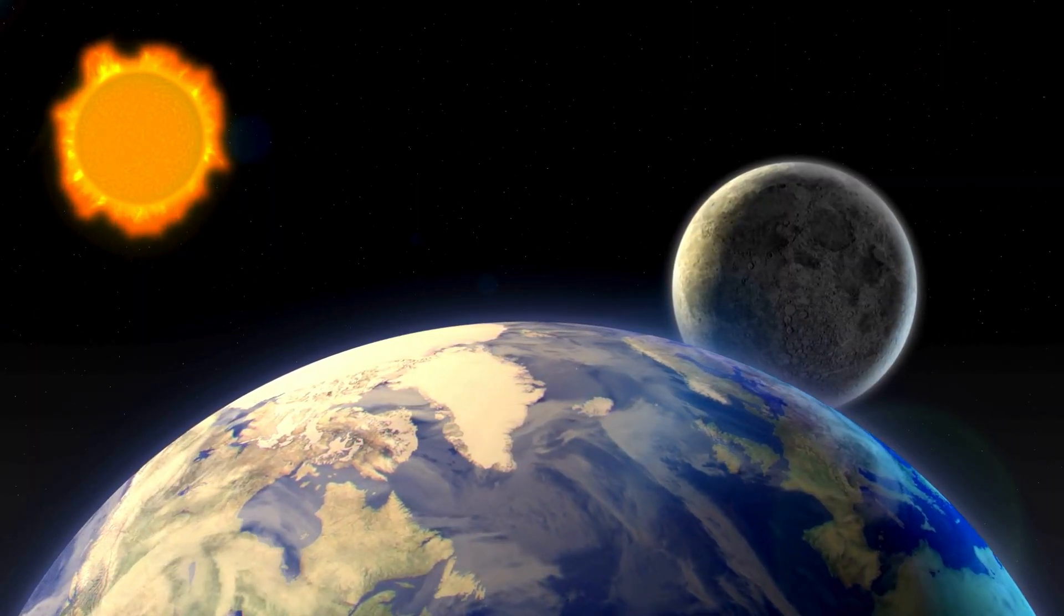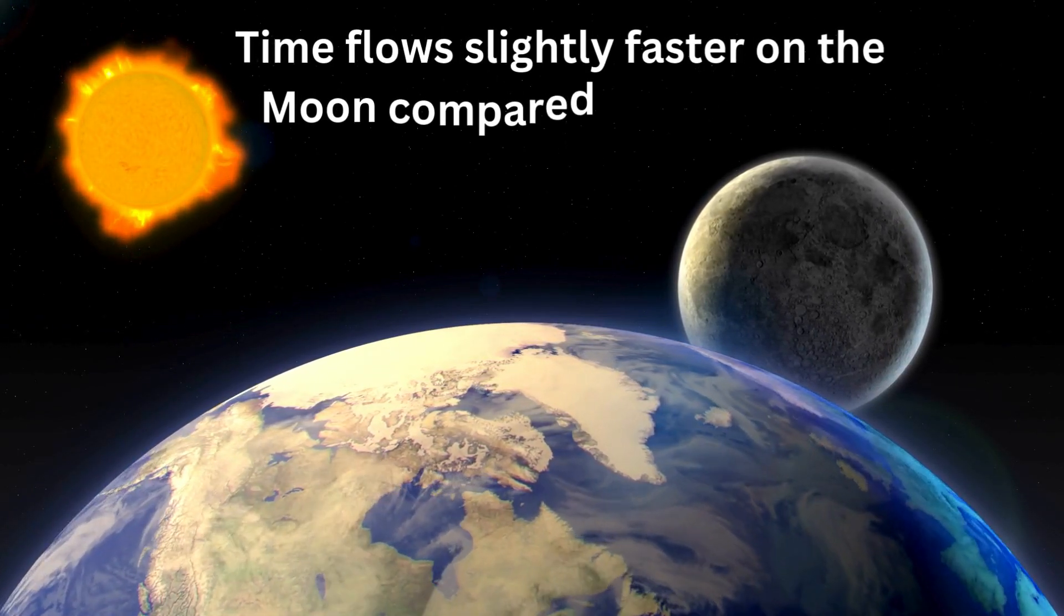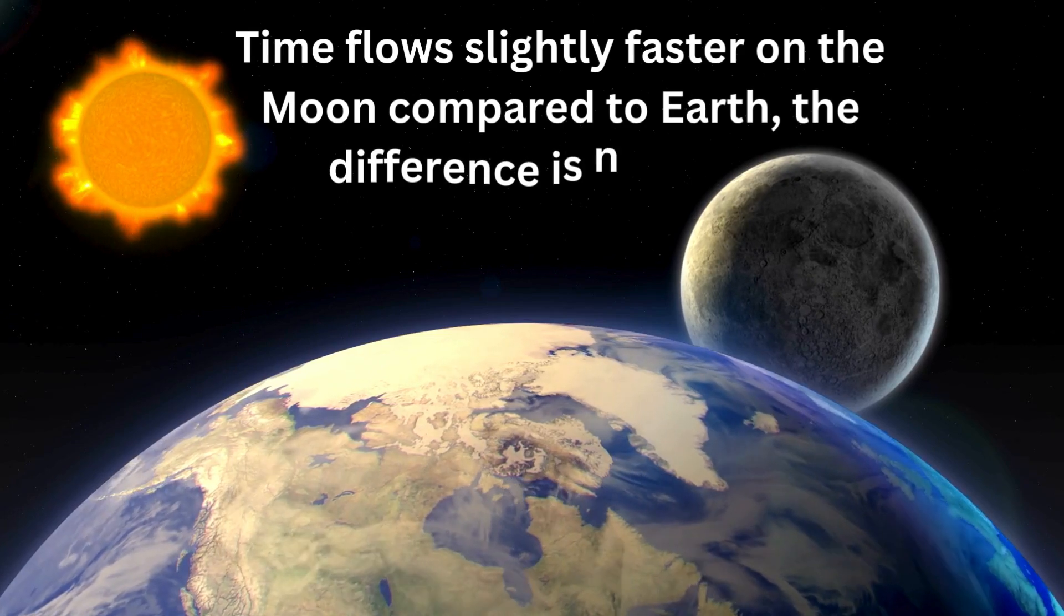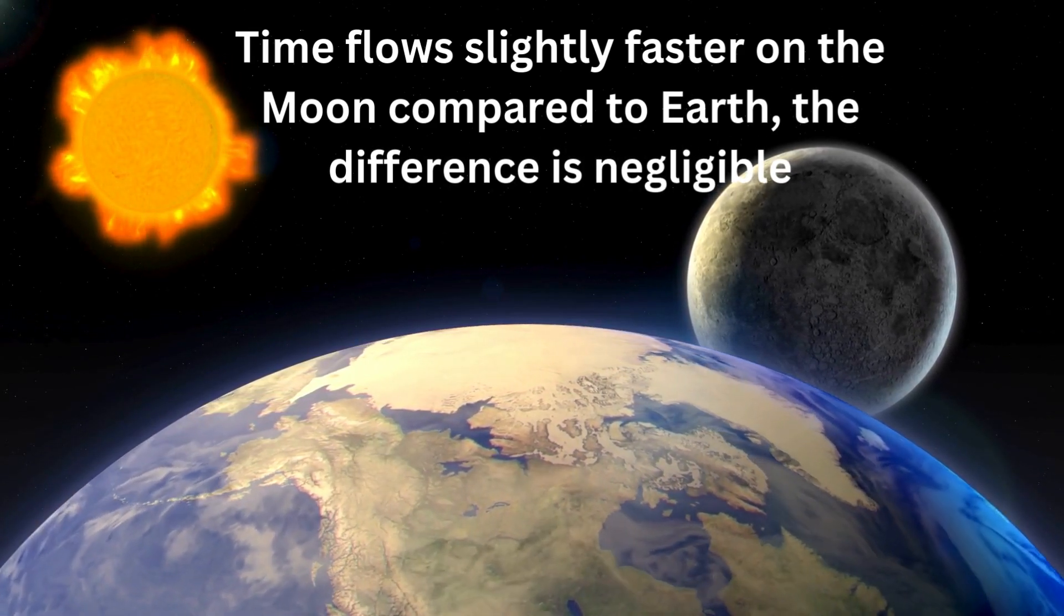So, while time flows slightly faster on the moon compared to Earth, the difference is negligible. On the sun, however, the effect of gravity is much more significant, leading to a noticeable slowing of time.